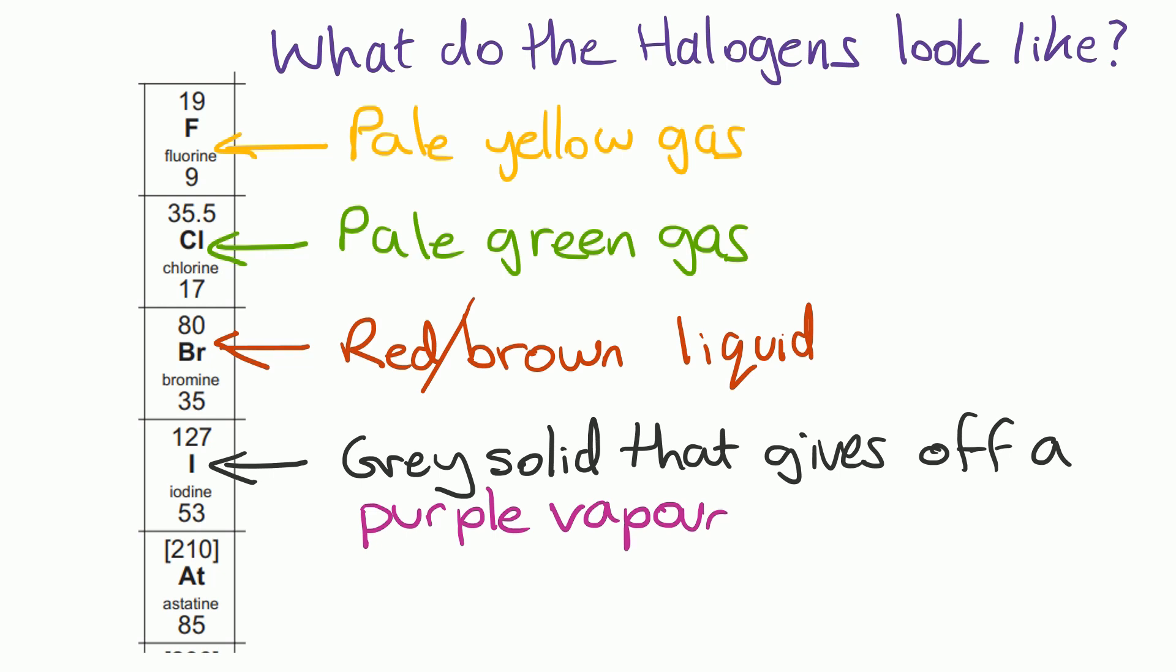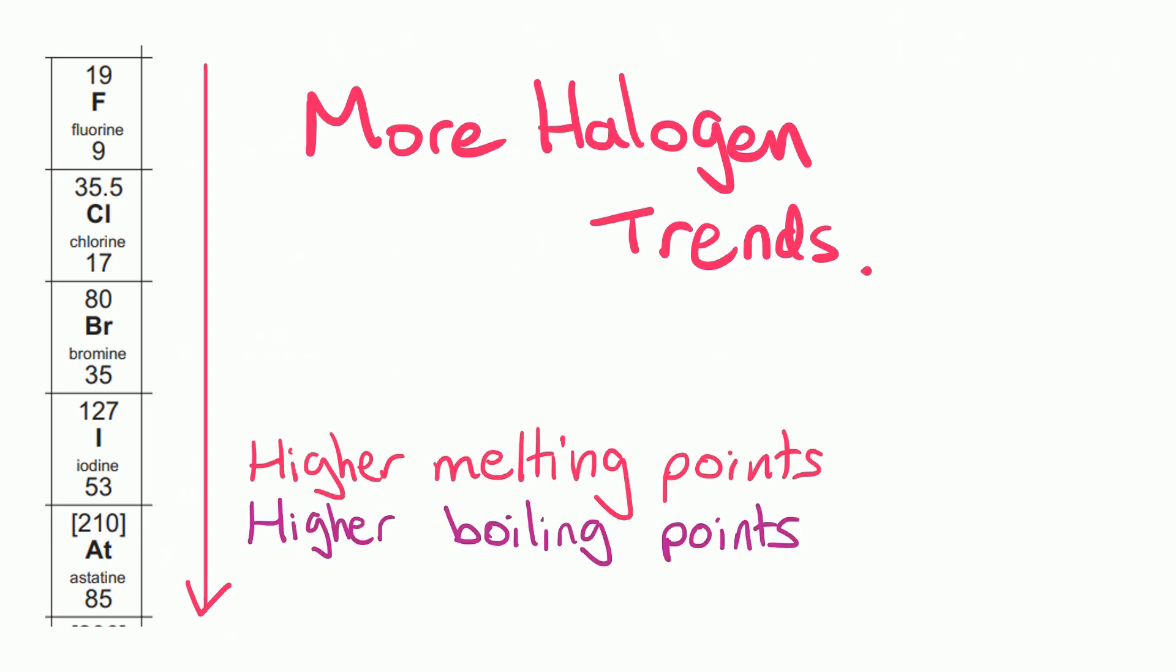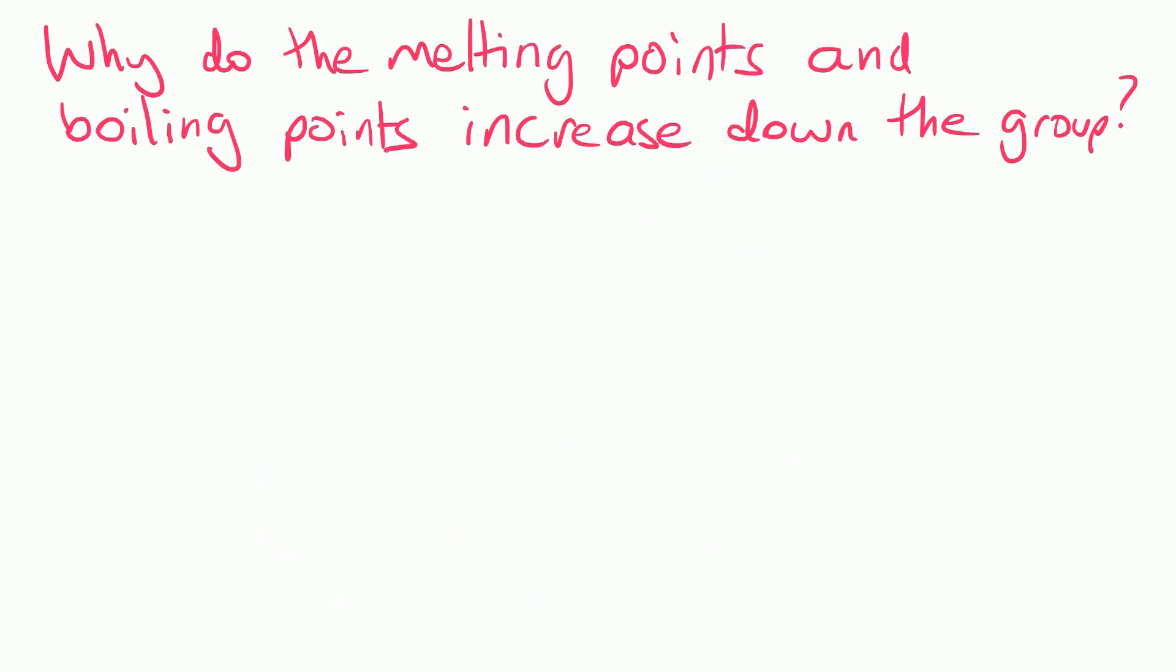So the other halogen trends apart from reactivity that I've just hinted at is that as you go down group 7 they have higher melting points. They also have higher boiling points. And we can see from the mass numbers that the relative atomic masses are increasing from 19 to 35.5 and so on. So in your exam you could be asked why do the melting points and boiling points increase going down the group. So let's look at what the molecules are actually like.